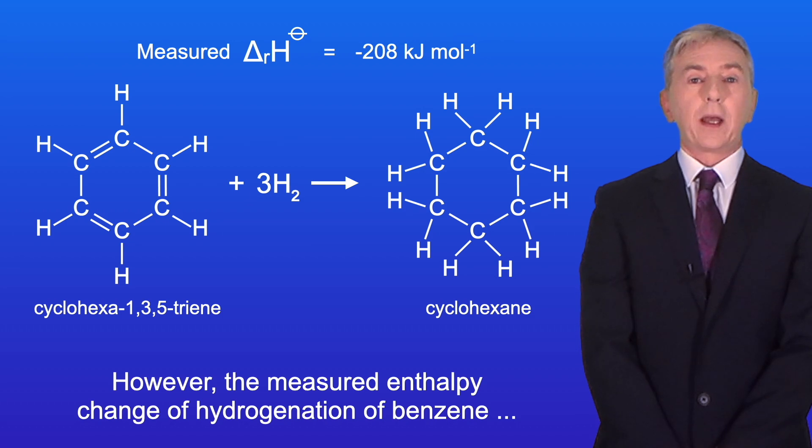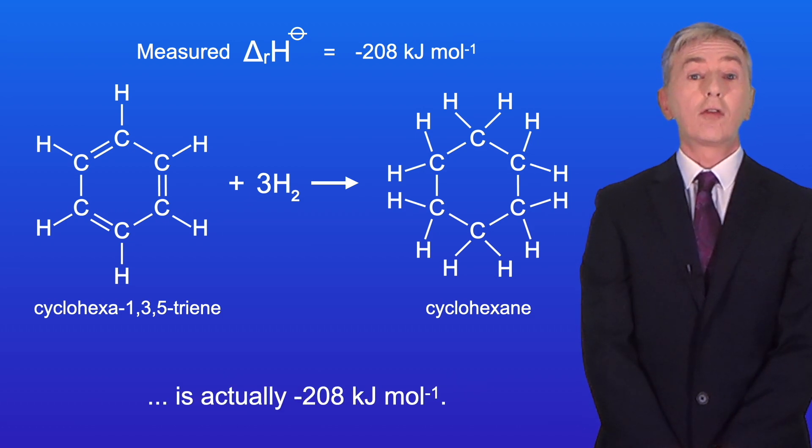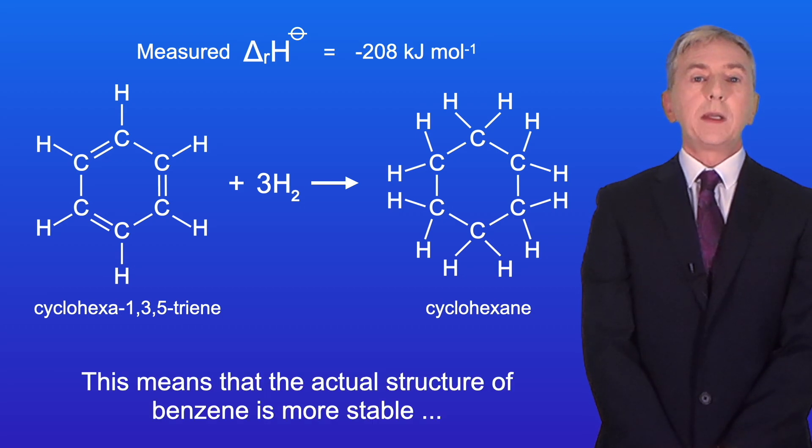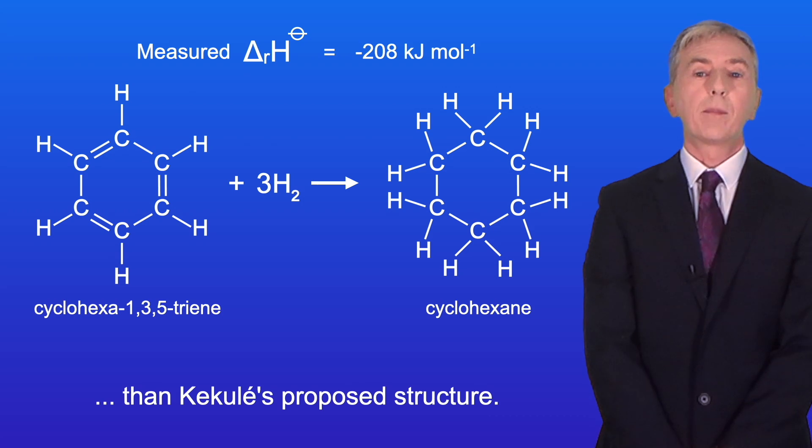However, the measured enthalpy change of hydrogenation of benzene is actually minus 208 kilojoules per mole. So this means that the actual structure of benzene is more stable than Kekulé's proposed structure.